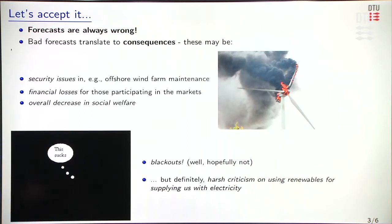Still, when it comes to forecasting, we have to accept it. Forecasts are always wrong to a certain extent — there will always be a part of forecasting error. The problem is that bad forecasts translate to consequences. And when it comes to renewable energy generation, there may be security issues, for instance, when it comes to offshore wind farm maintenance planning. Imagine that you plan some maintenance offshore and then there are issues in terms of wave height, wind speed, etc., and your crew is in danger.